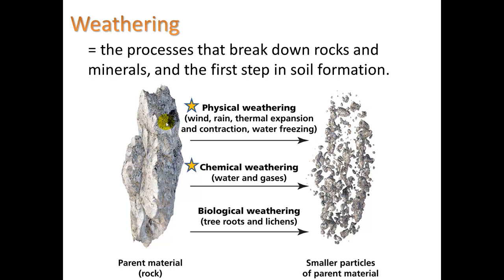Chemical weathering also occurs as water dissolves minerals, and gases can also weather rock. In some areas, exposed iron in rock turns into iron oxide, giving an orangish or reddish kind of soil like we see in places like Georgia and Florida. And biological weathering — tree roots can be very strong in breaking apart rock, and even lichen can exert biological weathering.